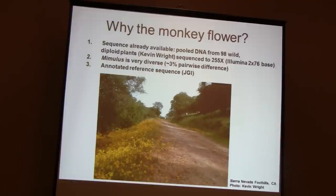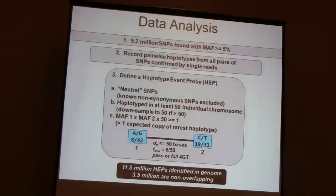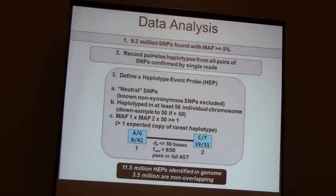It turns out to be very ideal, because Mimulus is extremely diverse, which makes it easy to distinguish one chromosome from another. We also have an annotated reference sequence of Mimulus guttatus made at the JGI. Data analysis first aligns all two billion reads — which covers the genome 255 times over — and called SNPs. I was able to identify 9.2 million relatively common SNPs with minor allele frequency larger than 5%, and a whole lot of less common SNPs as well.